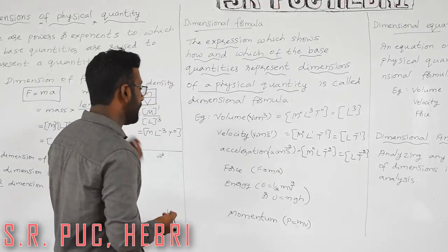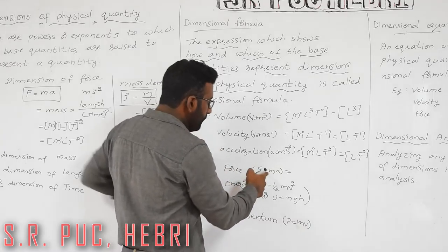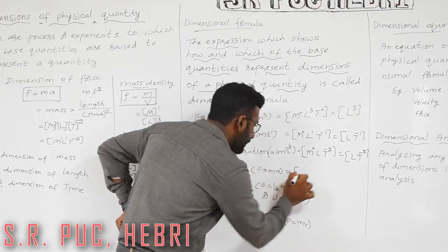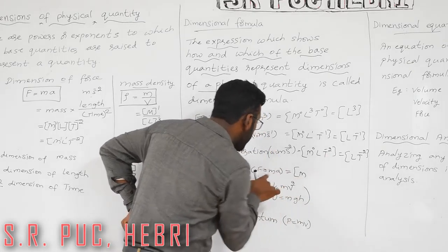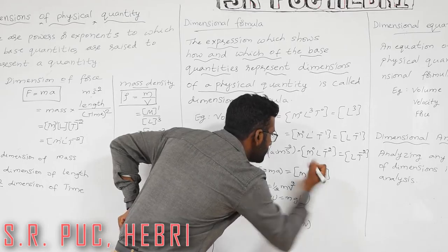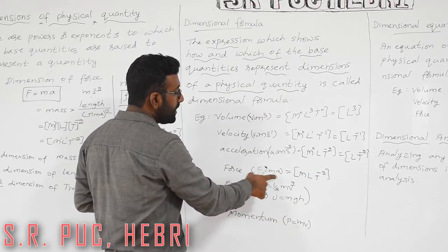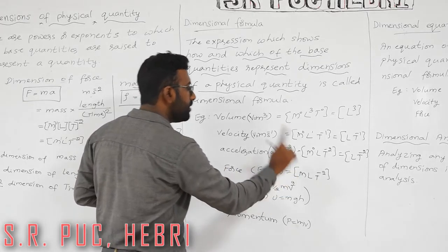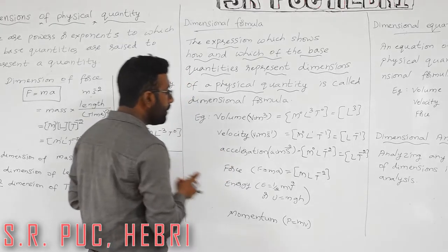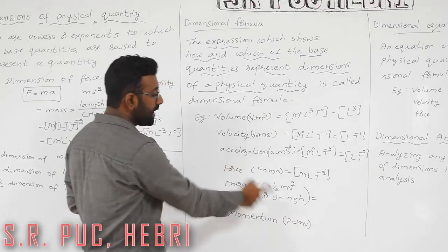For force, F = ma, we know mass is M and we already have acceleration as L T⁻², so we write M L T⁻². For energy, we use E = ½mv². Leave the constant ½ aside; we have mass M and velocity squared.